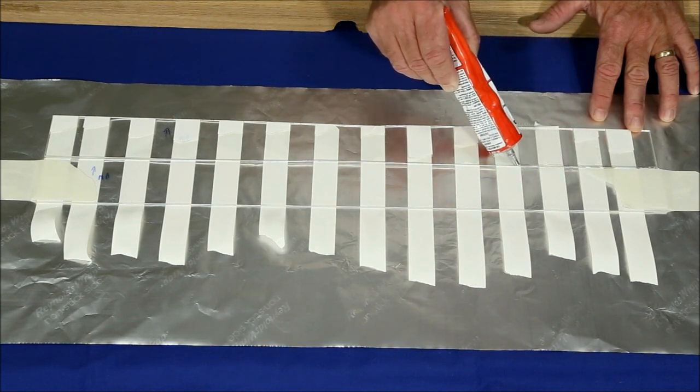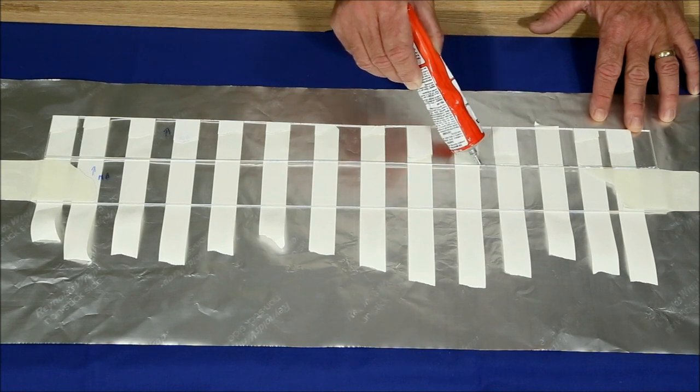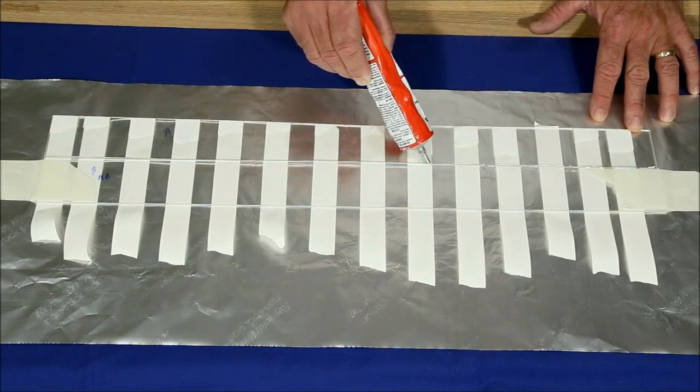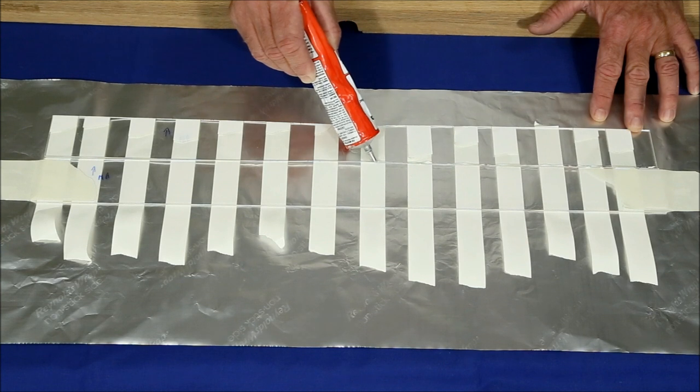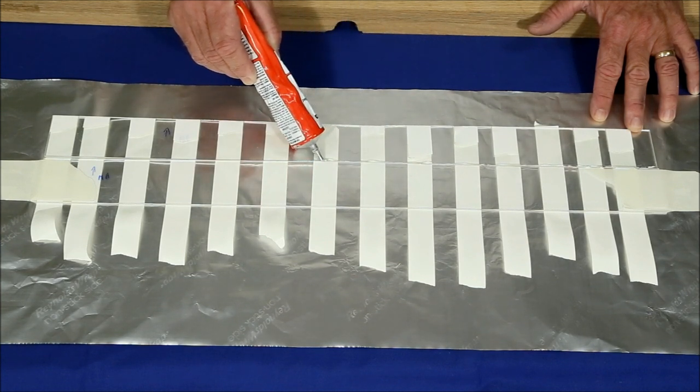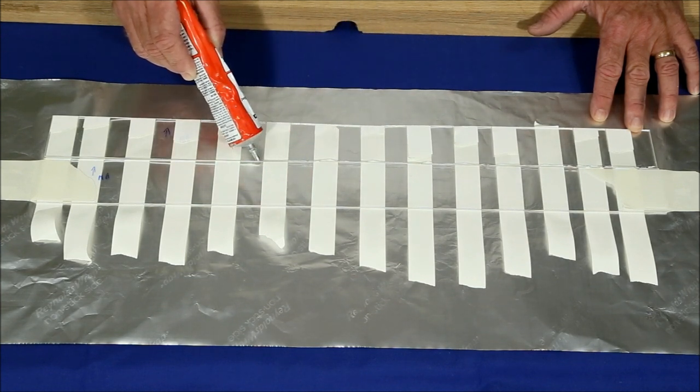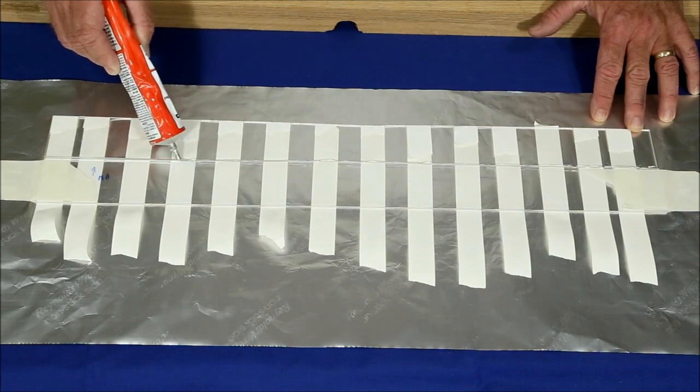The adhesive I'm using is Weldon No. 16 Clear Medium Bodied Solvent Cement. It produces a joint that's strong enough to be handled in just 20 minutes, but it requires an additional 24 hours to cure completely.